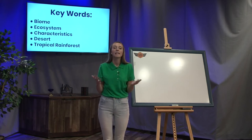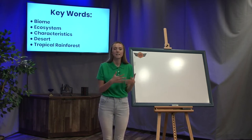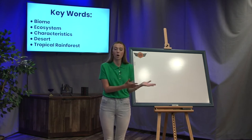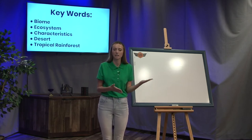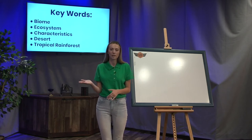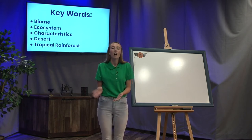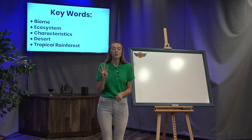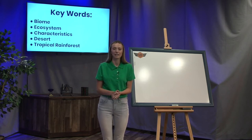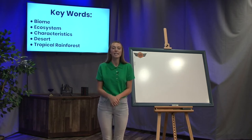Keep that in your head. If you want to write down that definition of characteristics, that would be great. Remember, characteristics are what makes something or someone what it is. What makes a desert a desert? What makes a tropical rainforest a tropical rainforest? Our fourth keyword is desert, and our fifth is tropical rainforest.